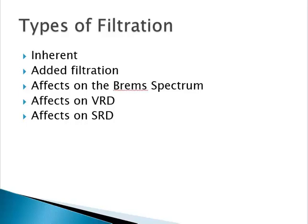Filtration: we have two types — inherent filtration and added filtration. Different textbooks give different definitions. By the strictest definition, inherent filtration is only the glass that holds the vacuum in the x-ray tube. You could theoretically hook up electricity to an x-ray tube with no housing and make x-rays — they did that in the early years of x-ray creation. So that glass truly is your only inherent filtration, but you can't legally expose somebody to that x-ray beam.